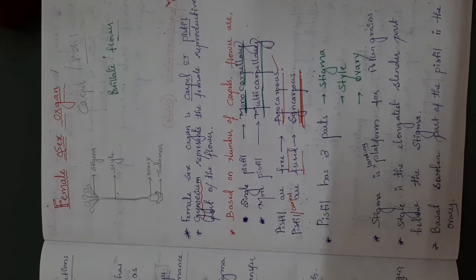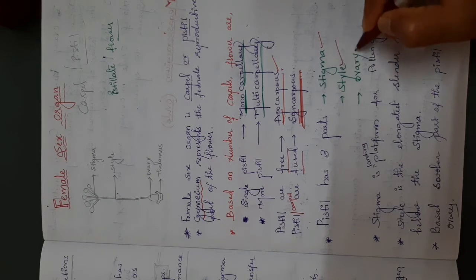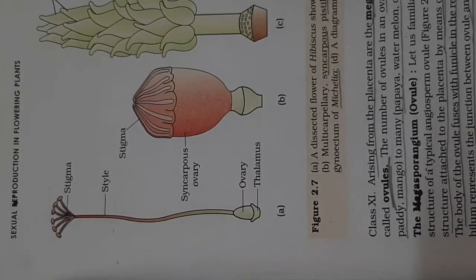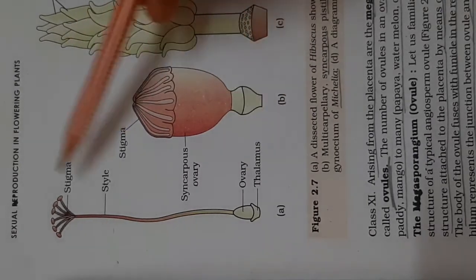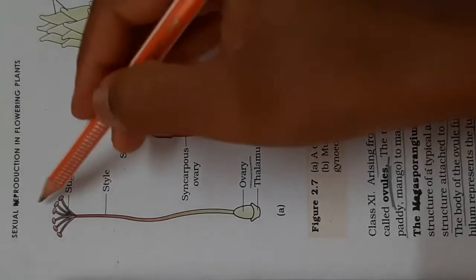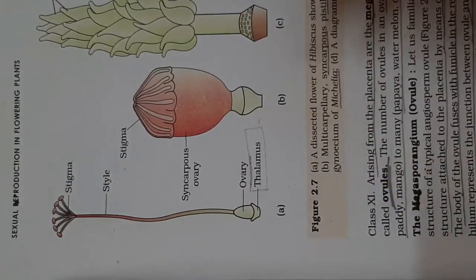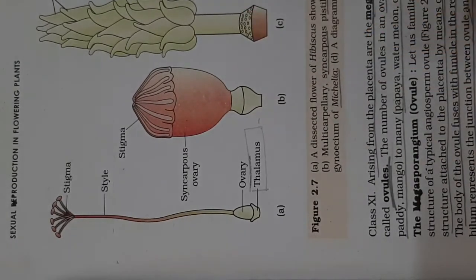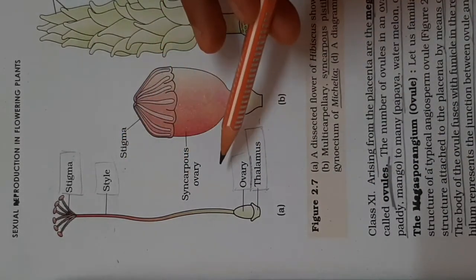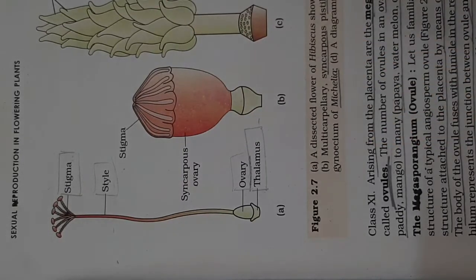Carpel or pistils have three important parts: those are the stigma, style, and ovary. The diagram of pistils is very clear in your NCERT book. You can see the structure of the carpel — it has stigma, style, and ovary. The whole carpel is attached with the thalamus, that is the receptacle of the flower.